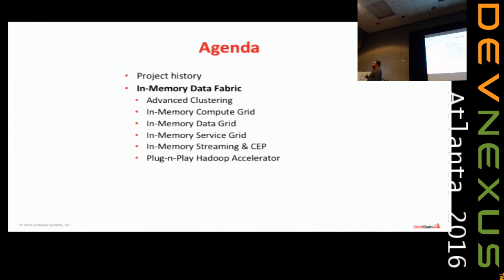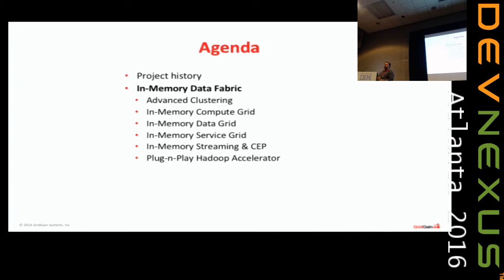Today you can buy an entire rack — not only RAM, the entire computer system: 10 blades each with 100 gigabytes of RAM, power disks, everything else — for about $20K. That's a terabyte of RAM, normal DDR4, plus a whole cluster of computing around it. The entire thing can be bought today, brand new, something like Dell, for $20K. If you go on eBay, you can buy it for even less.